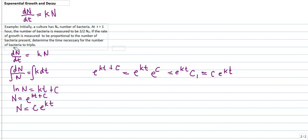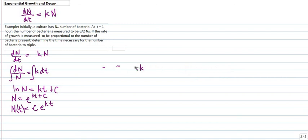So we will be using this formula. This is n of t — the number of bacteria at a certain time — equals c times e raised to kt. We will be using this formula for our solution to this problem.